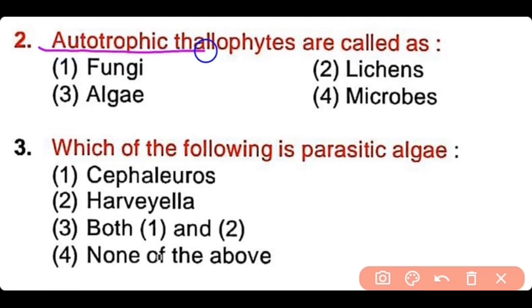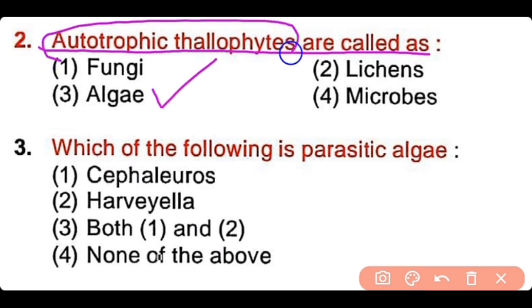Question number 2: Autotrophic thallophytes are called as fungi, lichens, algae, or microbes? The answer is option 3. Algae are known as autotrophic thallophytes.